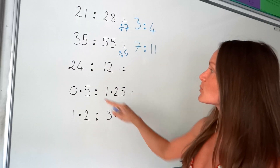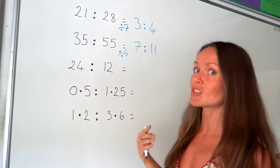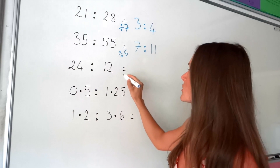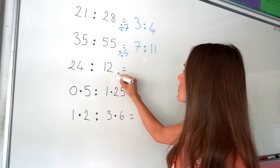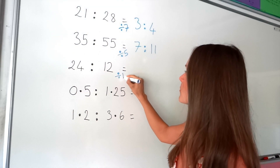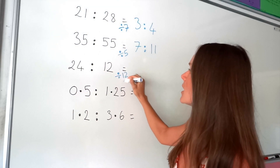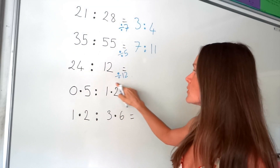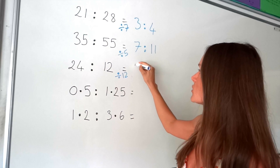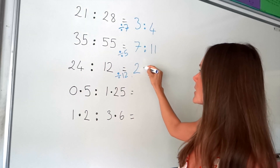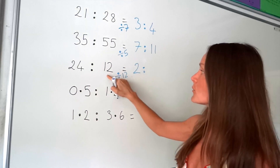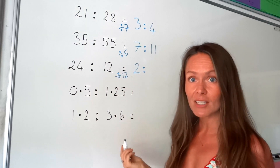In this one here, the highest common factor is 12. So I'm going to divide both of them by 12. 24 divided by 12 is 2, and 12 divided by 12 is 1.